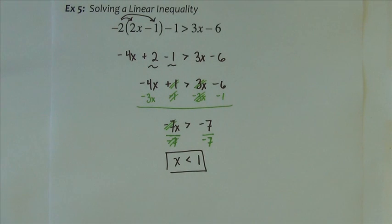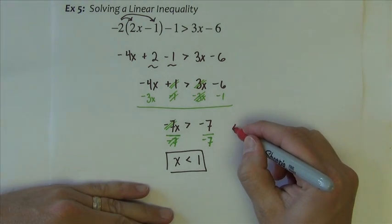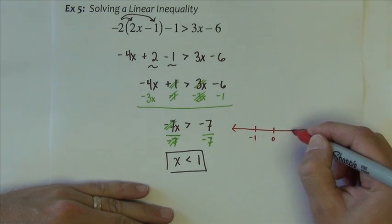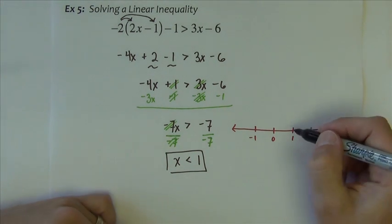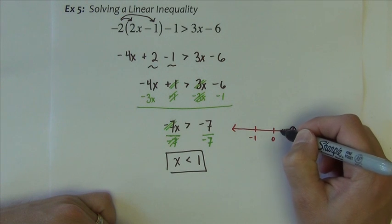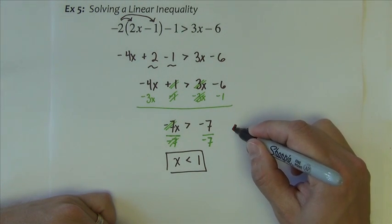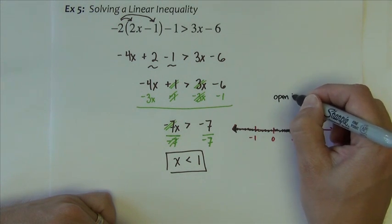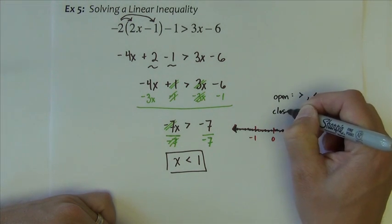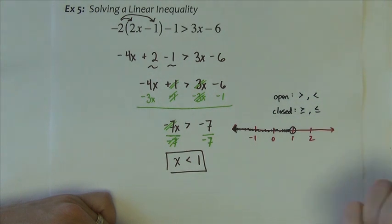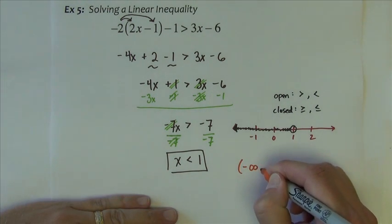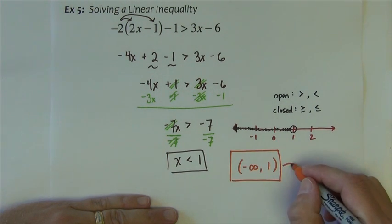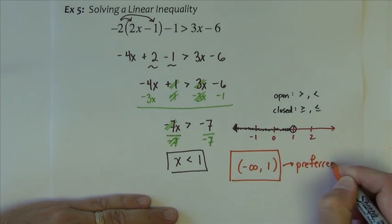Now, if you needed a number line, let's show what our number line would look like. I want all the values that are less than 1. So I'm going to use open circle at 1, less than goes to the left. Remember, we use open circle for greater than or less than. We use closed circle for greater than or equal to, less than or equal to. The equal to's make it closed. Now, interval notation, we typically always want to give that as well. The interval notation answer for this would be negative infinity to 1. And actually, this would be the preferred answer.